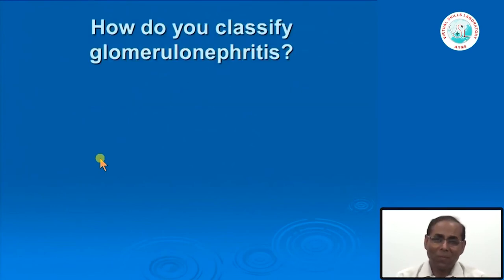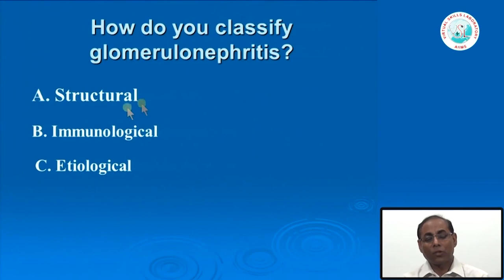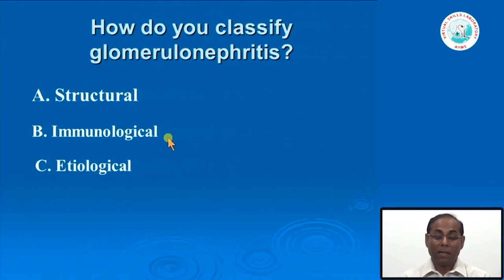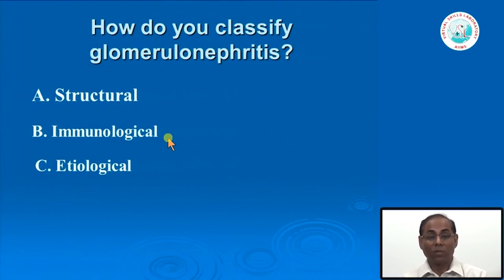A better term is 'glomerulopathy,' but we will maintain the terminology as glomerulonephritis. The next question is how to classify glomerulonephritis. Structural classification should be our mainstay. Another very important question is whether these abnormalities are associated with immune complex deposition or not, because the management and understanding of pathobiology differ greatly between glomerular diseases with and without immune complex deposition.